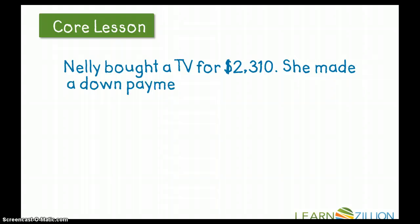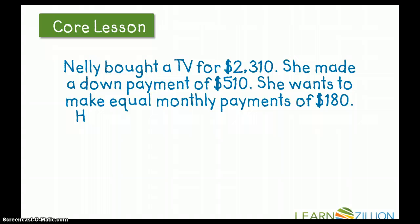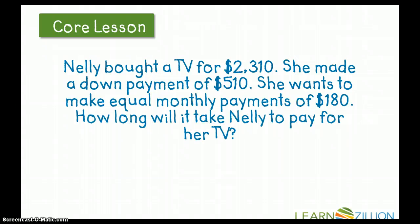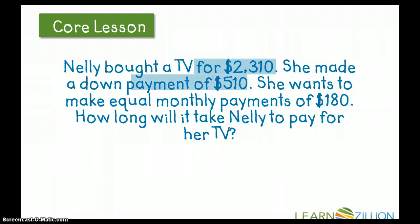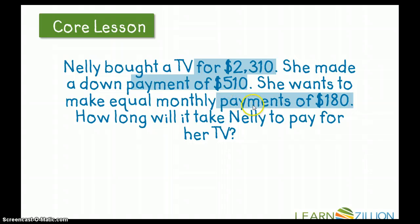Let's take a look at another problem — the problem we saw in the beginning of our lesson. Nellie bought a TV for $2,310. She made a down payment of $510. She wants to make equal monthly payments of $180. How long will it take Nellie to pay for her TV? I want to look for the important information to highlight. The first sentence tells me she's paying $2,310 total for the TV. She's making a down payment of $510, so even though the TV costs $2,310, she only has $510 to pay towards it right now. With the money she still owes, she wants to make equal monthly payments of $180. Let's put this information in a T-chart.